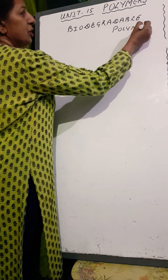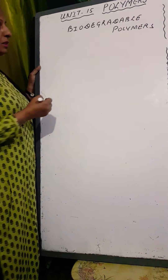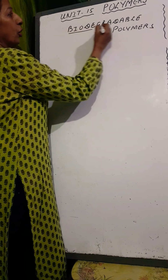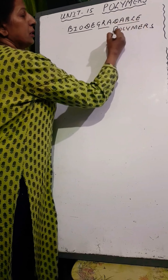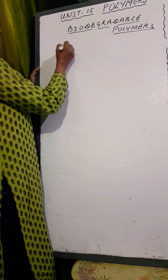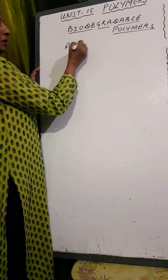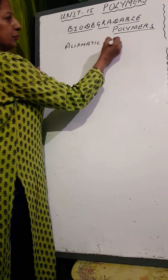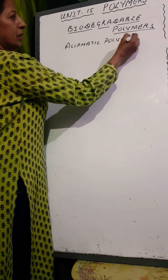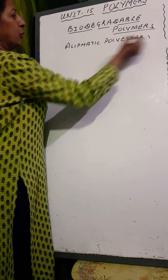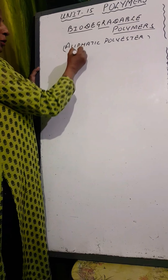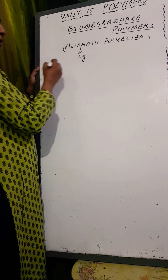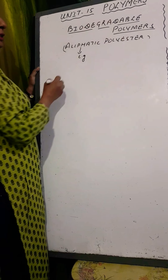A major drawback with polymers is that because of their branched structure, they are non-biodegradable. However, there is a category of polymers called aliphatic polyesters, which are biodegradable. Two important examples of aliphatic polyesters which are biodegradable polymers will be discussed.